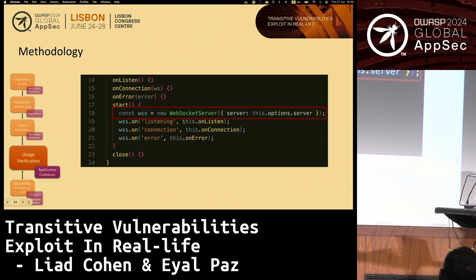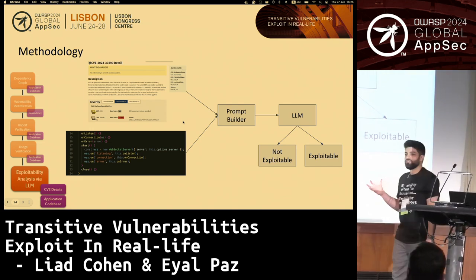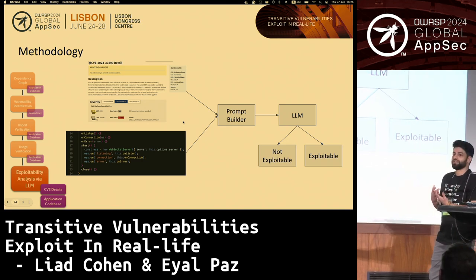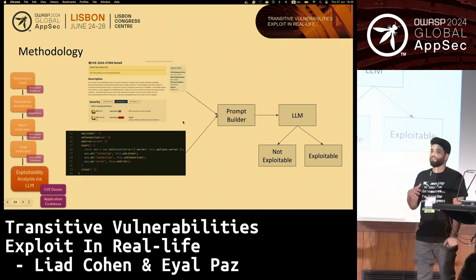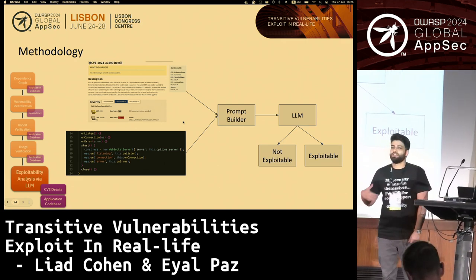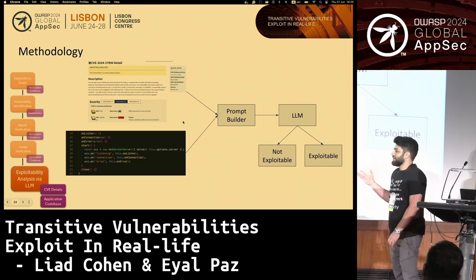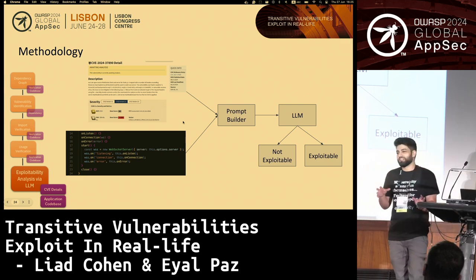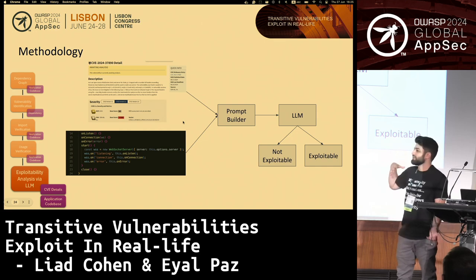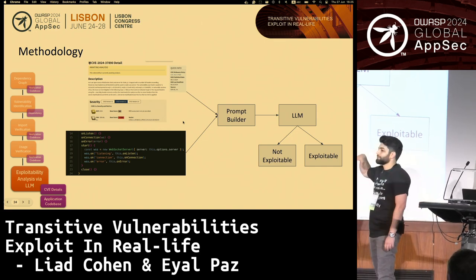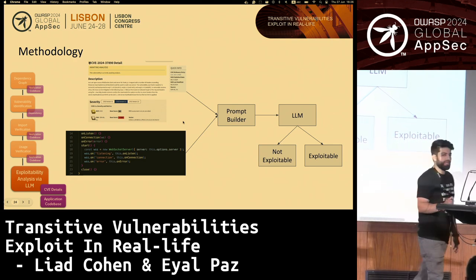All of these steps gather data and context, which is fed into the final step to conclude whether our usage is actually exploitable. We take all data from NVD — the CVE description, GitHub advisories, GitHub comments, the mitigation process, and the actual requirements for the vulnerability to be exploitable, including which flags need to be on. We build a prompt — how to build a good prompt is a discussion for different research — and we send all of this data, including the usage and the code, into a prompt builder, which creates the prompt and sends it to an LLM, which gives us the final verdict on whether the vulnerability is exploitable.